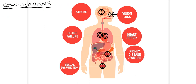If hypertension is not controlled due to compliance issues — patient not taking drugs properly or not making lifestyle modifications — there is an increased chance of developing complications, which are the main cause of mortality. The most common complications include stroke, which has a high mortality rate, heart failure due to the high load on the heart, sexual dysfunction, and vision loss due to increased pressure on retinal blood vessels. Heart attack can also occur as increased blood pressure leads to plaque buildup and arterial blockage.